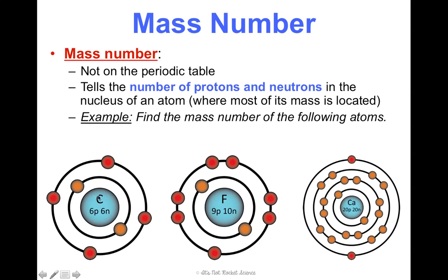So looking at this, C stands for carbon. Carbon always has 6 protons. Now, 6 protons plus 6 neutrons means the mass number is 12. Alright, fluorine. Think about it. The mass number is 19 because 9 plus 10. Alright, now think about calcium. And it is 40. Alright, awesome.